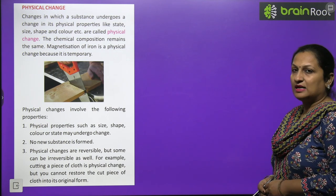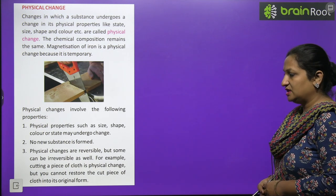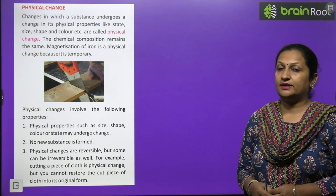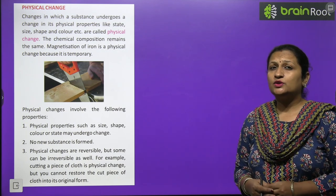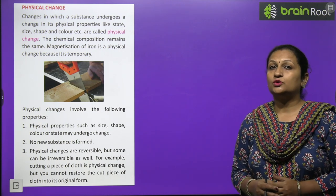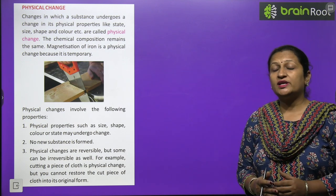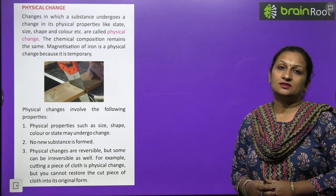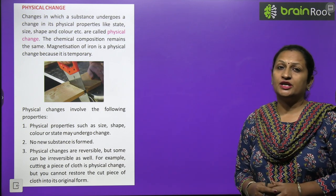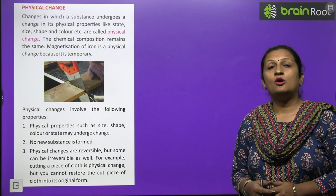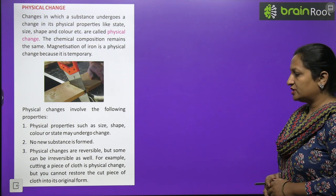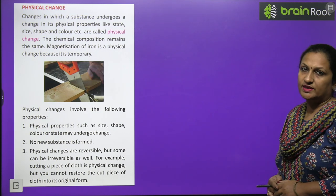Physical changes are mostly reversible, but some can be irreversible. For example, cutting a piece of cloth into small pieces - the properties of each piece remain the same as the original, but you cannot restore it to its original form. It is still a physical change because no new substance is formed and there is no change in composition. Cutting a piece of cloth is a physical change, but you cannot restore the cut piece to its original form.